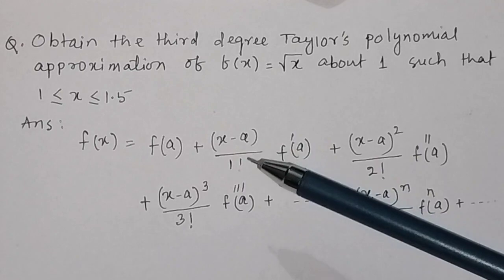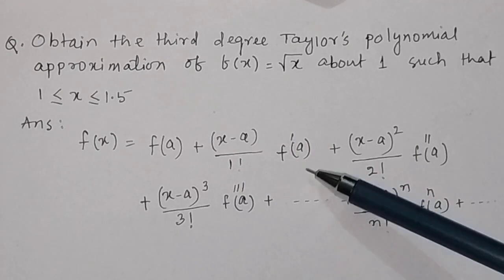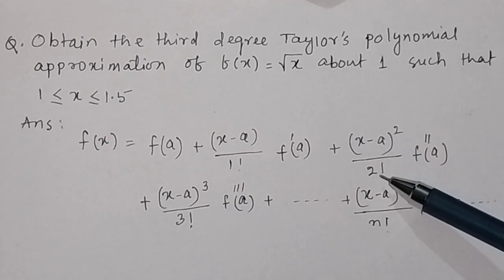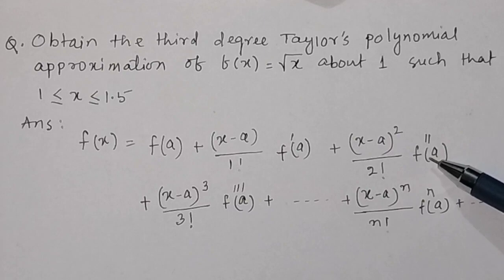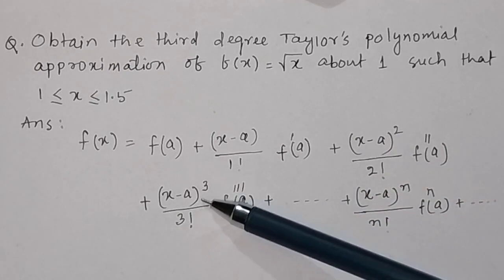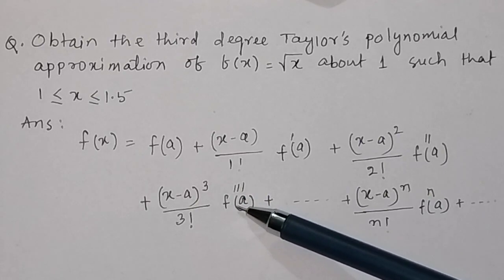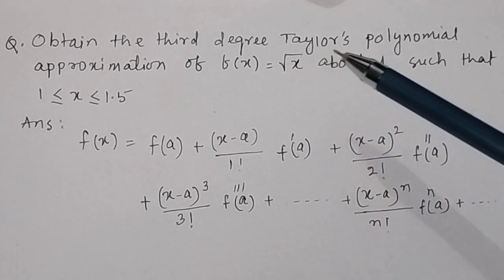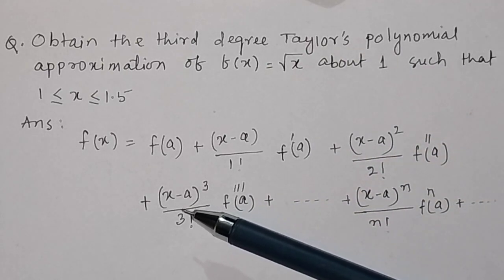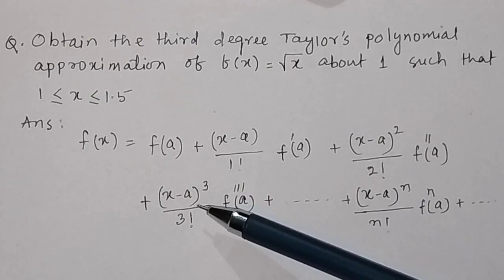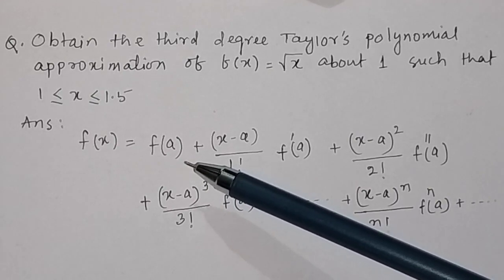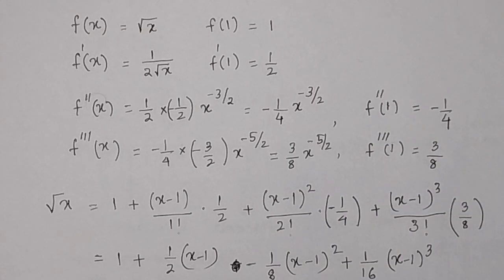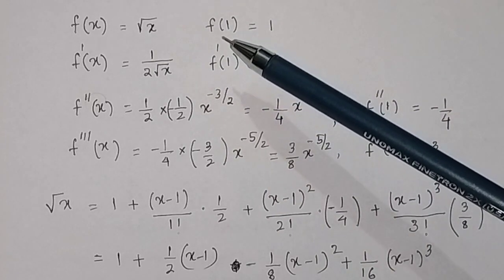We have to find the third degree Taylor polynomial. In Taylor's expansion, f(x) equals f(a) plus (x−a)/1! times f'(a), plus (x−a)²/2! times f''(a), plus (x−a)³/3! times f'''(a), and so on up to the nth derivative. The third degree polynomial means we need the first four terms.